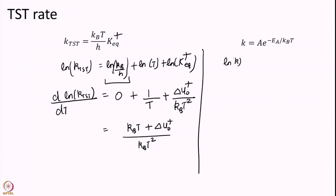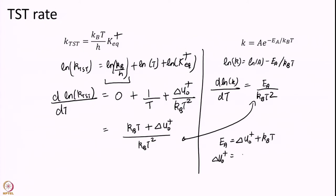But if I compare this with the Arrhenius equation. So, if I do the same thing here and d ln K over dT the first term will vanish and I will get is EA over KT square. And if I compare these two what I get is EA is delta U naught dagger plus KT or delta U naught is EA minus KT.